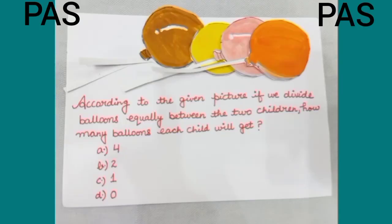Now, the question for practice. According to the given picture, if we divide balloons equally between 2 children, how many balloons will each child get? Option A: 4. Option B: 2. Option C: 1. Option D: 0. Students, you can clearly see in the given picture we have 4 balloons, and when we divide these balloons equally between 2 children, each child will get 2 balloons.